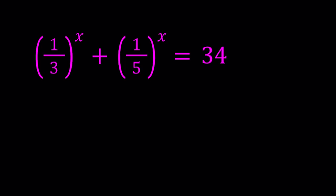I know some of you already guessed the answer, but let's go ahead and take a deeper look. So we have 1 over 3 to the power x plus 1 over 5 to the power x equals 34.